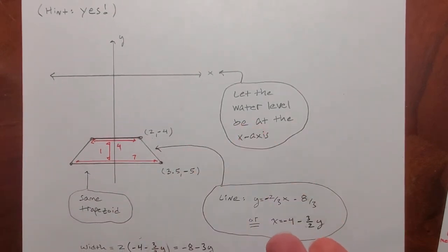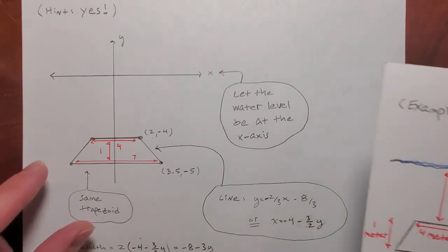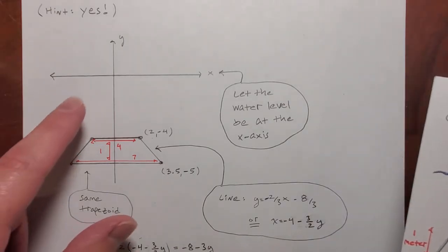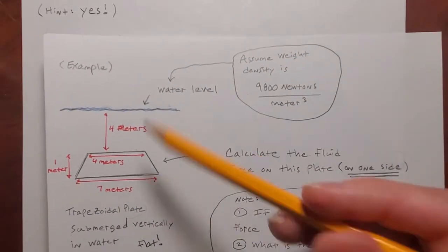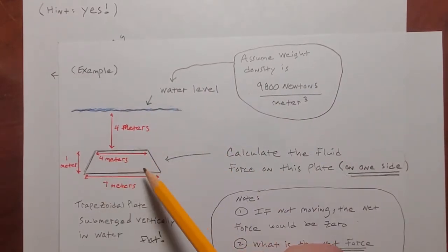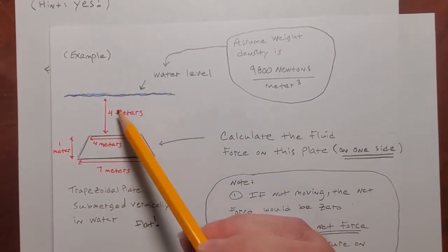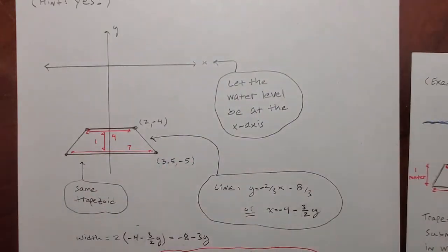Everything is consistent with the picture that I was given. Everything, like every point and number on this sketch with the y-axis imposed on it is consistent with the plate being this shape and size and being 4 meters beneath the water. Okay. Totally consistent.